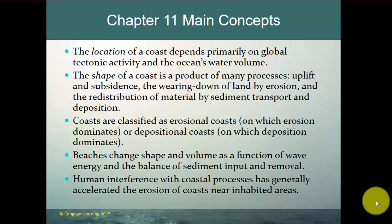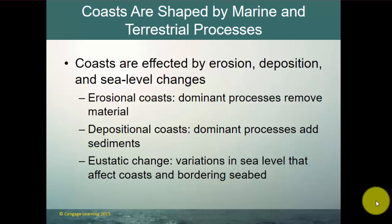Main concepts in this chapter: the location of the coast depends primarily on global tectonic activity and the ocean's volume of water, which determines sea level and where the coast may be at any given point in geologic time. The shape of the coast is a product of many processes, including uplift and subsidence, erosion, redistribution of materials by sediment transport and deposition. Coasts are classified as erosional or depositional. Beaches change shape and volume as a function of wave energy and the balance of sediment input and removal, and human interference with coastal processes has generally accelerated the erosion of coasts near inhabited areas.